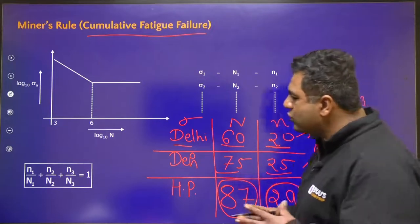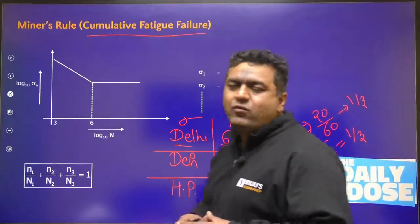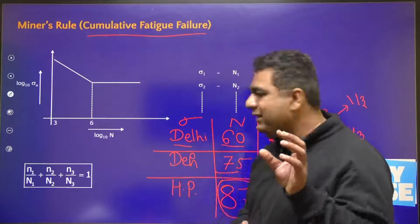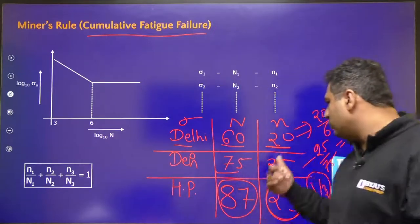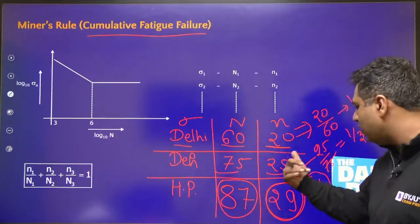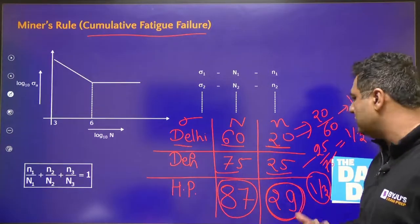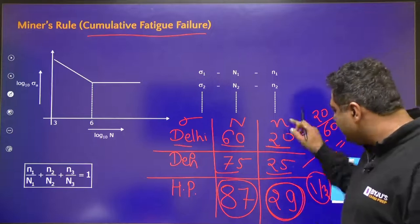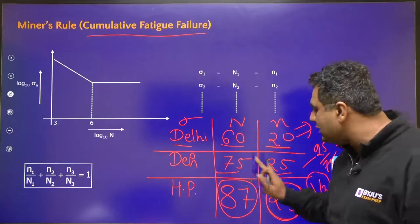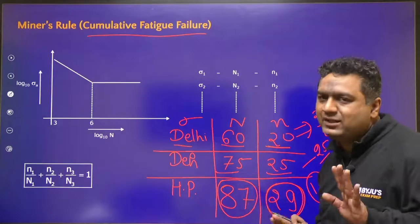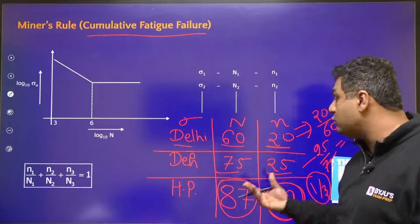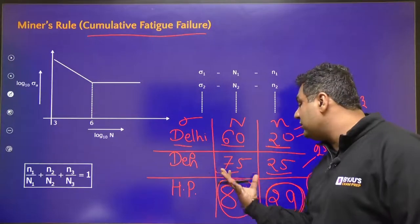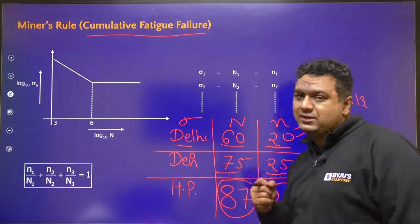What I want to say is that whenever you are not living in one area for your full life, then you have to find out the total life as a summation of these fractions. This summation is not 60, not 75, not 87 — because you are living some time in this city, some time in this, and some time in this.